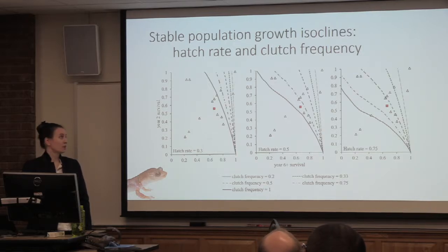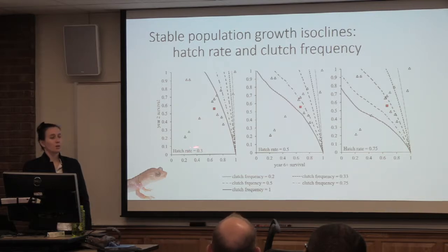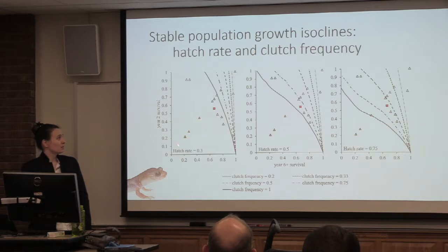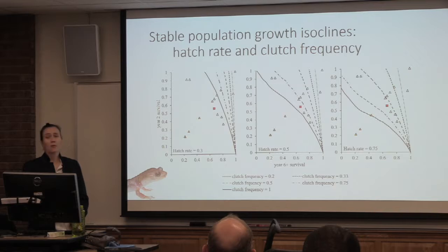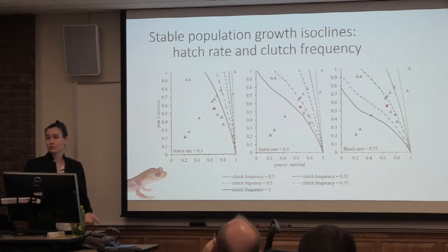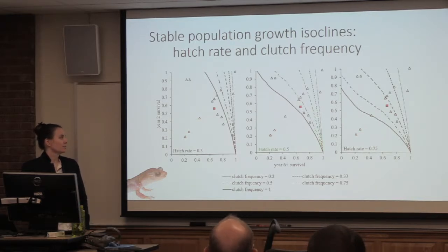Adding all the isoclines in, you can see that when hatch rate is very low, most of the rates can't produce stable or growing populations. Over here, when hatch rate is pretty high, a lot of the rates are maybe reasonable. Three rates here are to the left of all the isoclines under basically every combination of values — these are probably what we might call garbage rates. They're not working under any of the scenarios we estimated, so it's problematic that there are these profoundly implausible estimates out there in the literature.